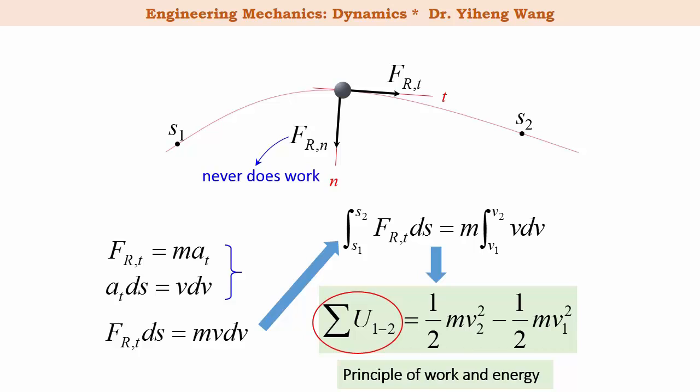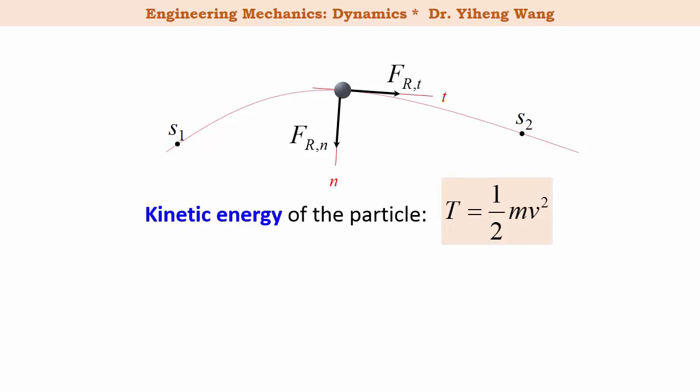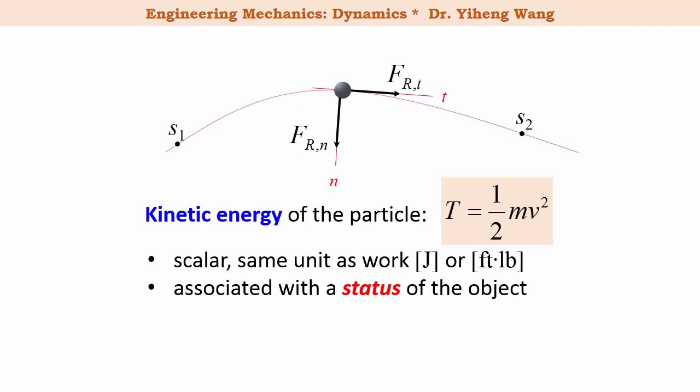The left-hand side is the work. What is the right-hand side? For any particle with speed v, we can define its kinetic energy as T = ½mv². Kinetic energy is the energy associated with the motion of the object. Just like work, it is also a scalar with the same units: joules in the SI unit system and foot-pounds in the US customary unit system. Unlike work, which is associated with a process, kinetic energy is associated with the status of an object. Because T = ½mv², the mass must be non-zero and v² must be non-negative, so kinetic energy is always non-negative.